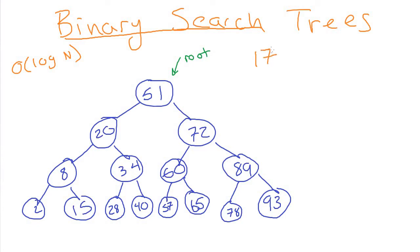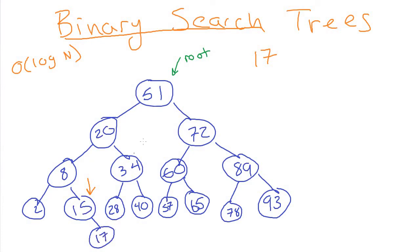Binary search trees are more efficient to insert data into than a sorted array. Let's talk about how we would insert the number 17 into the binary search tree. It's actually really similar to the binary search algorithm itself. We start looking at the root: 51 is bigger than 17, so 17 will go into the left subtree. We move to the left child, compare 17 with 20 — 17 is less, so we move left again. We compare 17 to 8 — 17 is bigger — so we move to the right child. Then we compare 15 to 17 — 17 is bigger — so we move to the right child of 15, but there is no right child. That's the place where we insert 17. The insert is also O(log n).